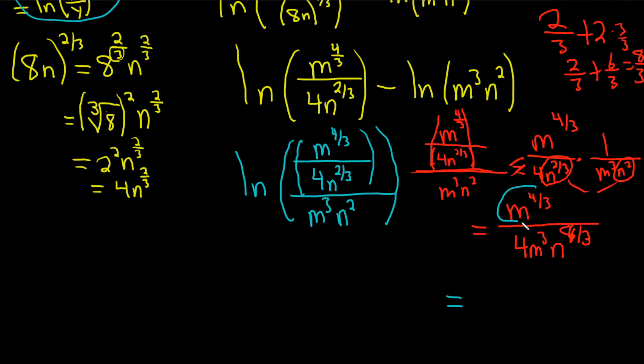We have m to the four-thirds over m cubed. So what you do here is you subtract. You do four-thirds minus three. So multiply this by three over three. So it's four-thirds minus nine-thirds, which is negative five-thirds.